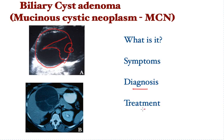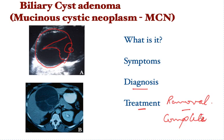Once diagnosed, the treatment involves removal by way of surgery, and removal has to be complete — because if any part of the cyst is left behind, that part is at risk of developing cancer. The surgery can be performed through a minimally invasive or open route. The aim is to completely remove the cyst, either by removing the cyst alone or, sometimes inevitably, removing part of the liver where the cyst is contained. Other treatments such as aspiration or partial removal of the cyst are not effective.